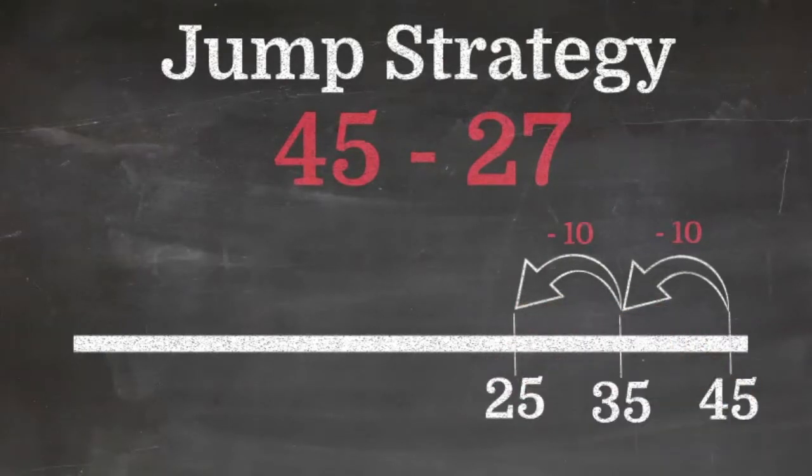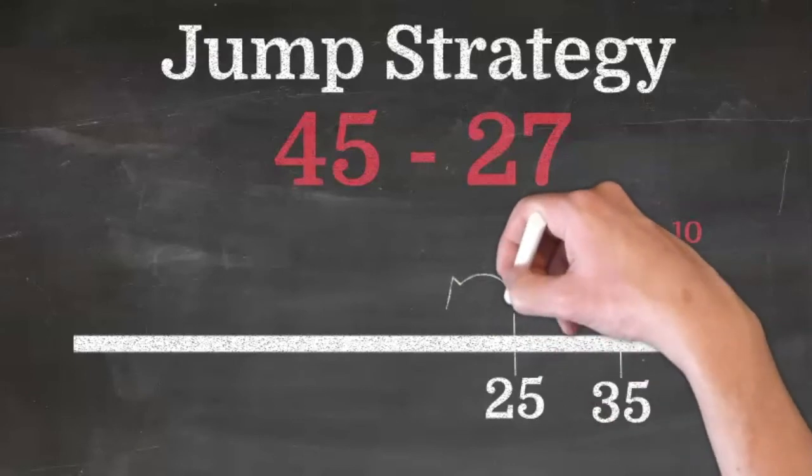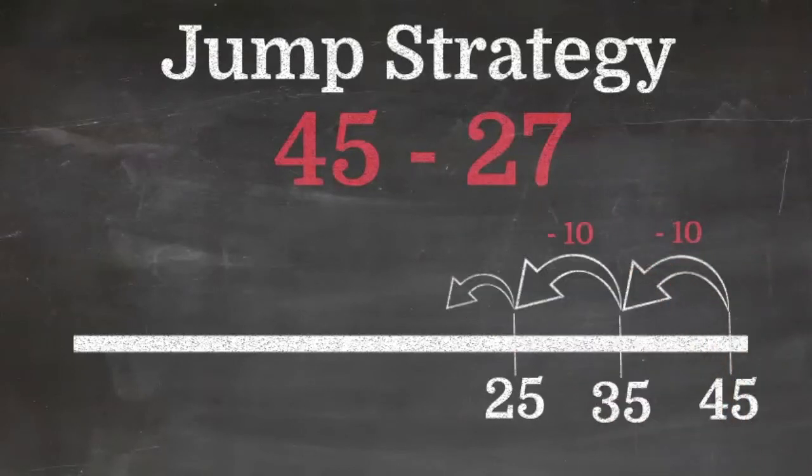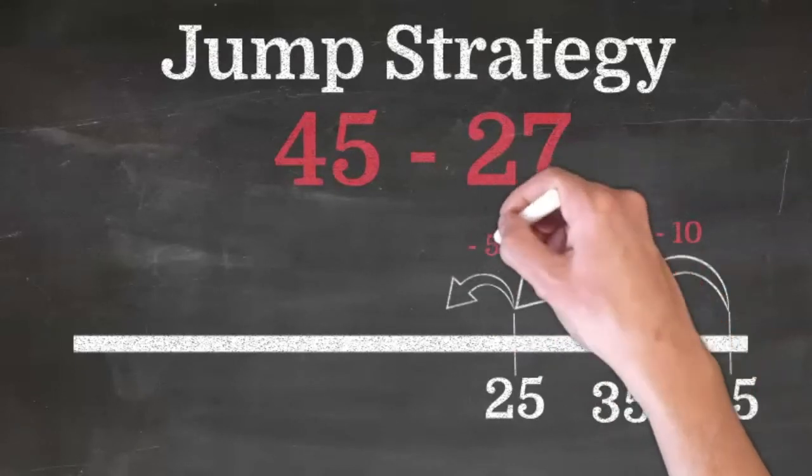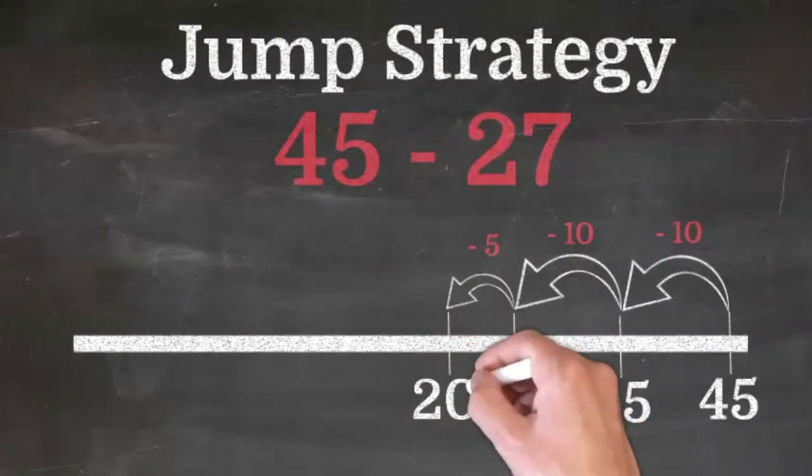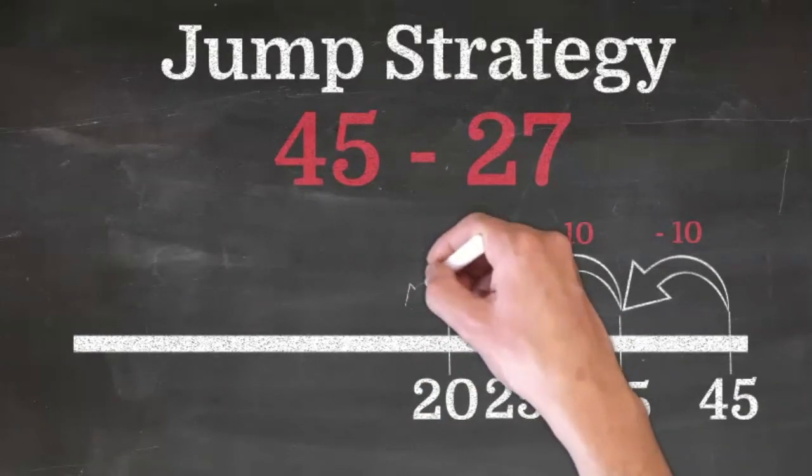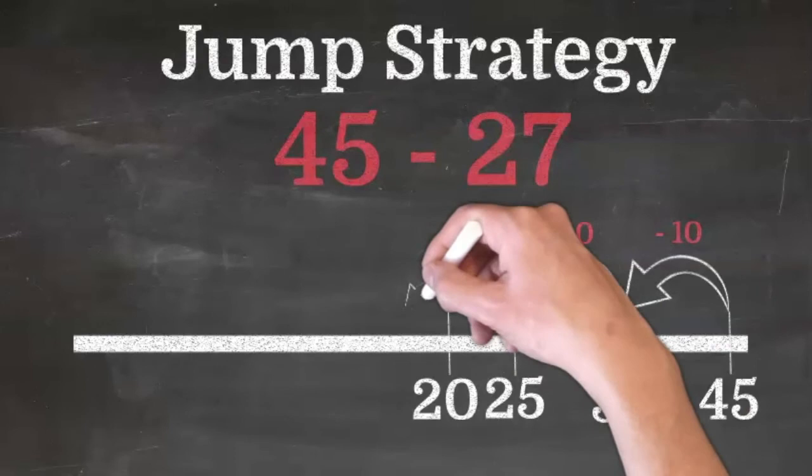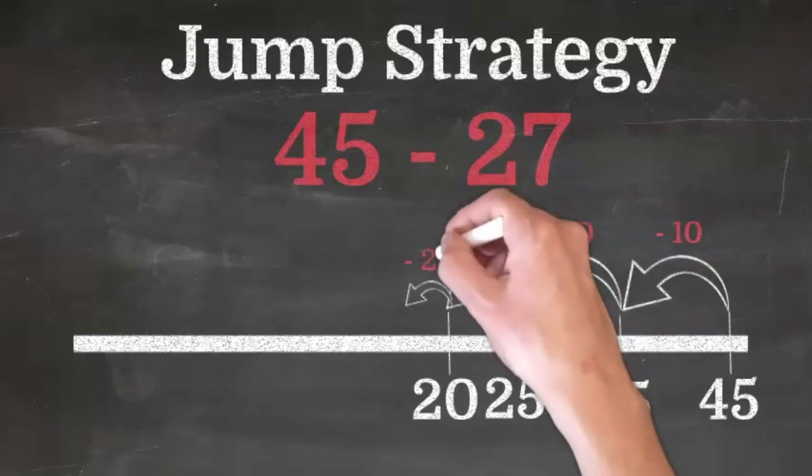And then to make this even simpler for myself, I'm going to think about that 7 as a 5 and a 2. So I'm going to subtract that 5 because that gets me to a friendly 10. So I'm subtracting 5, gets me to 20. And then I still need to subtract my 2, which will get me to 18.